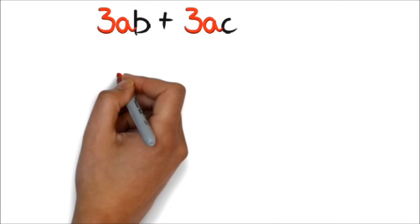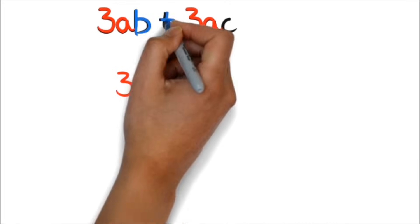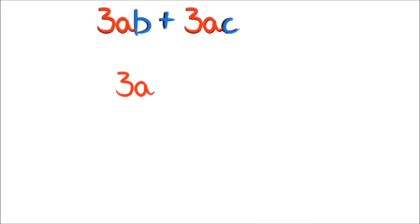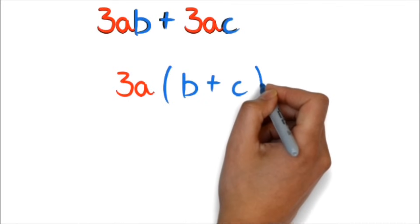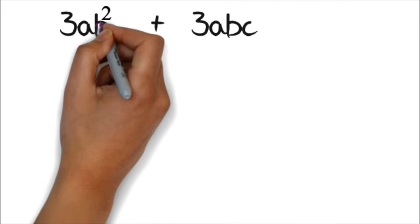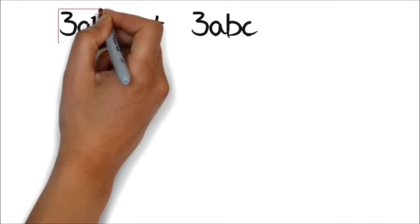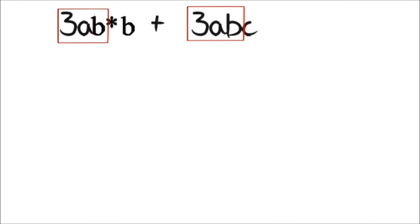With 3ab plus 3ac, since 3a is common in both terms, we can bring the 3a out. What will be left inside the parentheses is b plus c, giving us a final answer of 3a times in parentheses b plus c.